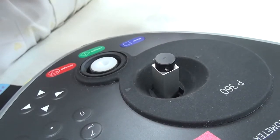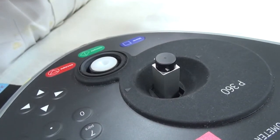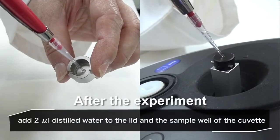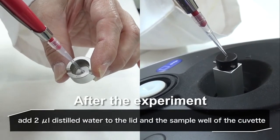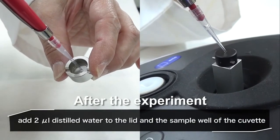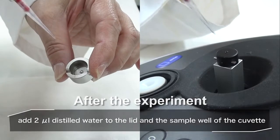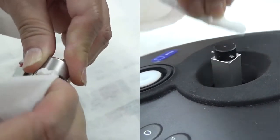17. Continue to measure the next sample. 18. After the experiment, add 2 µL distilled water to the lid and the sample well of the cuvette, respectively. Wipe clean with a Kimwipes tissue.